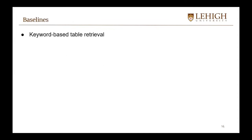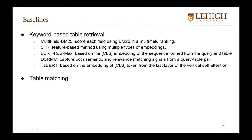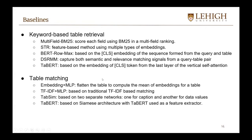For baselines, we compare against multiple methods for keyword-based table retrieval and table matching. For keyword-based table retrieval, we compare against multi-field BM25, which scores each field using BM25 in a multi-field ranking strategy; STR, a feature-based method using multiple types of embeddings; BERT-ROMAX, the state of the art, based on the CLS embedding of a sequence formed from the query and the table; DSRM, a deep semantic address matching model capturing both semantic and relevance matching signals; and TAP, based on the CLS token embedding from the last layer of vertical self-attention.